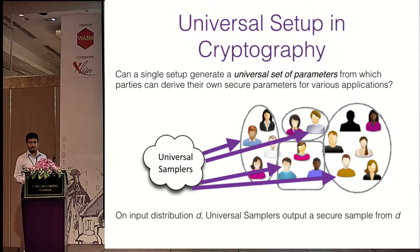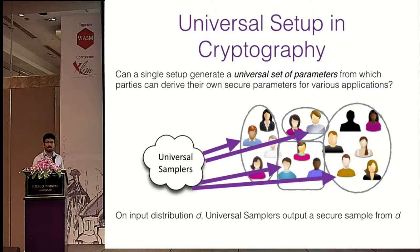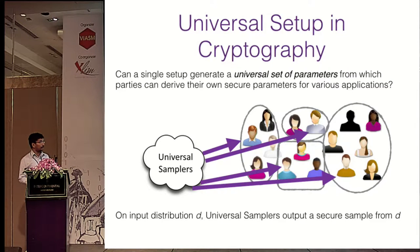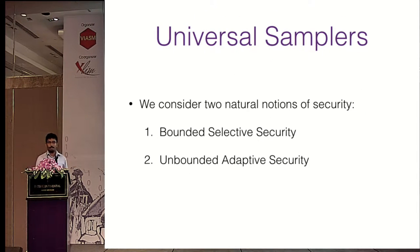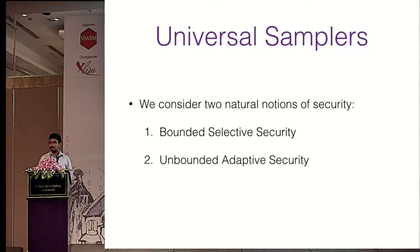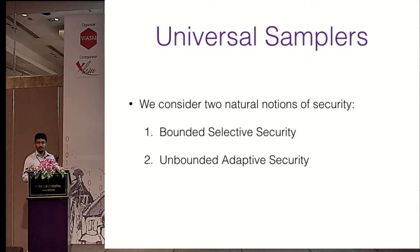What is the correctness requirement from a universal sampler scheme? Given any input distribution D, you require the universal sampler to output a secure sample from D — the output could be a public key, ciphertext, or anything needed. For security, we require that the output of the distribution does not reveal the randomness used to sample it. We consider two notions: bounded selective security and unbounded adaptive security.